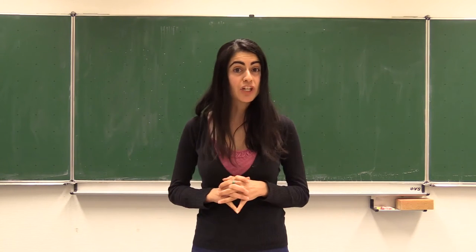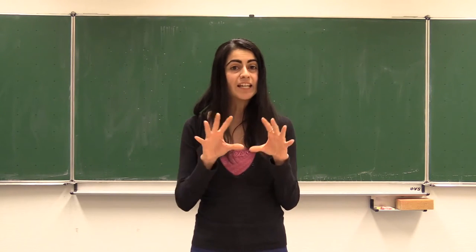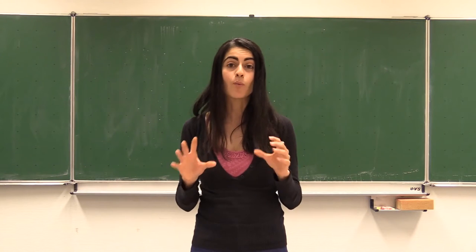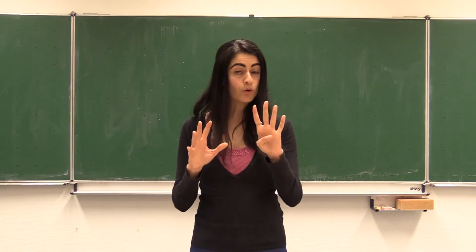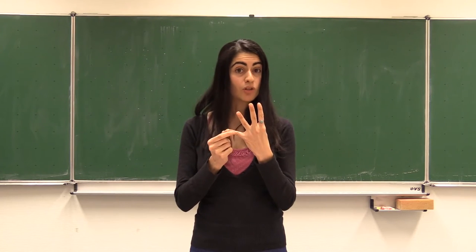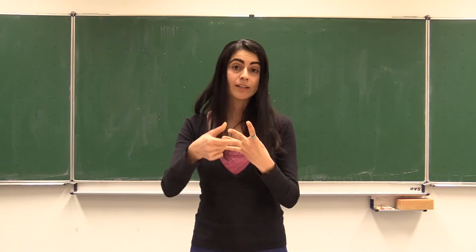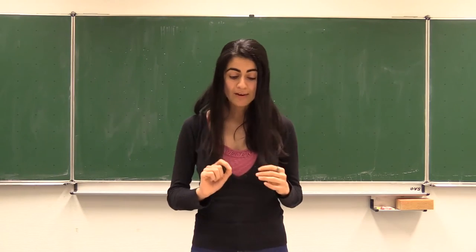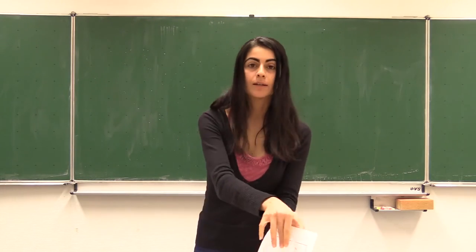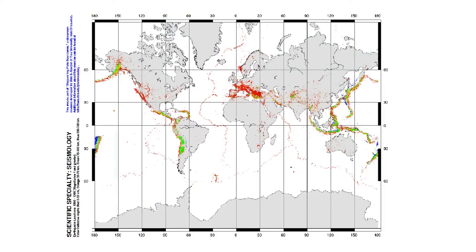In a minute, your teacher is going to break you into groups, and each group is going to have one scientific expertise associated with it. We have four groups: the seismology group, the volcanology group, the group of geographers, and the group of geochronologists. You will get a map in your group — for instance, this is the map that shows the distribution of earthquakes globally. So the seismology group, or the earthquake group, will get a map like this.